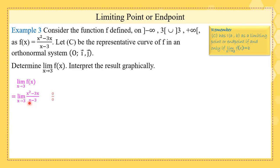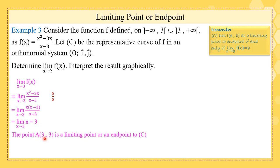The limit as x tends to 3 gives 0 over 0, so we can apply L'Hôpital's rule or the simplification method. If we take (x−3) as a common factor and simplify, we get the limit of x as x tends to 3, which is 3.